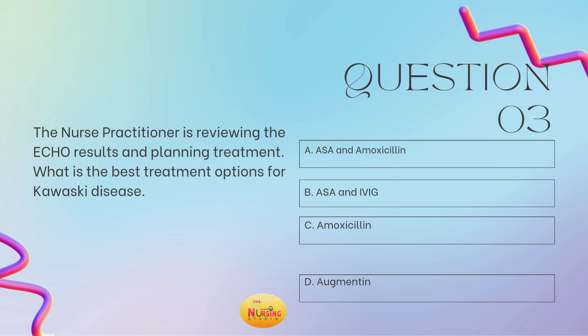The stem of the question states: what is the best treatment option for Kawasaki disease? For Kawasaki disease, we treat with aspirin and IVIG. Just as I was speaking of the importance of getting an echo, vasculitis is something that is a huge issue you want to stay on top of. Aspirin can help for symptomatic management and its anti-inflammatory benefits. We also use IVIG to prevent coronary artery damage and to help reduce the levels of inflammation in the tissues with the vasculitis that we worry about. So remember, for Kawasaki disease, we best treat with B — aspirin and IVIG.